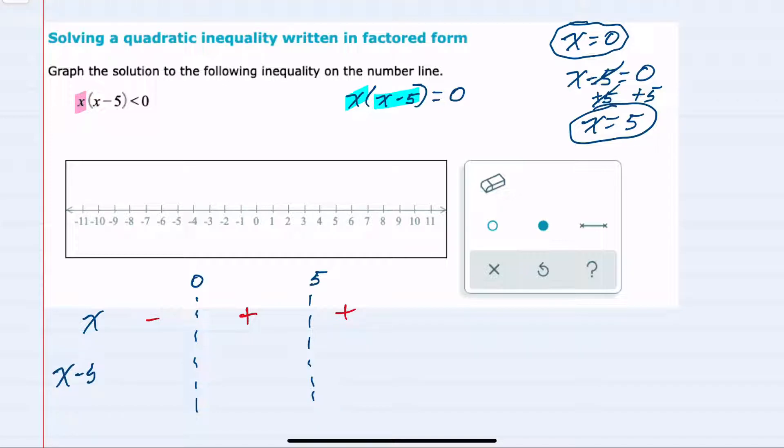And then I'll do the same, looking at the second factor, which is x minus 5. If I substitute anything larger than 5, like 6, 7, 8, then that would be positive. Anything to the left of 5 would be negative.